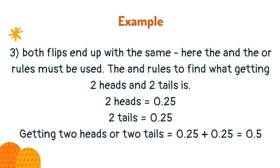For both flips ending up the same, both the and and or rules must be used. The and rule defines what getting two heads and two tails is: two heads = 0.25, two tails = 0.25. Getting two heads or two tails = 0.25 + 0.25 = 0.5.